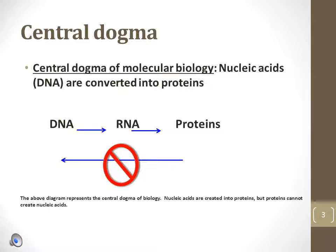The central dogma of molecular biology states that DNA makes RNA, and RNA makes protein. These steps almost always never go in the reverse direction, which means proteins cannot make RNA. So DNA makes RNA, RNA makes proteins.